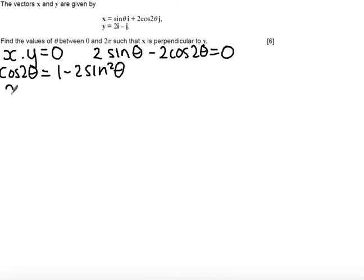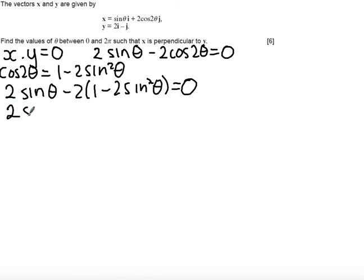If I substitute this into our equation, I get 2 sin theta minus 2 lots of 1 minus 2 sin squared theta, minus 2 plus 4 sin squared theta, all equal to 0.